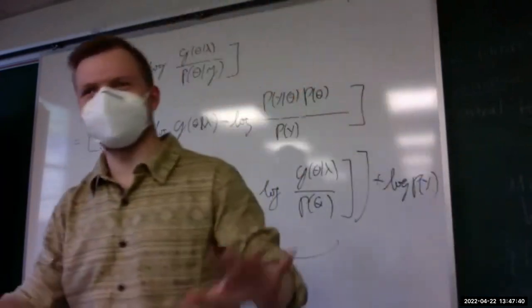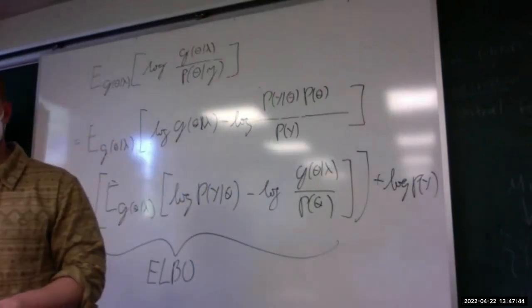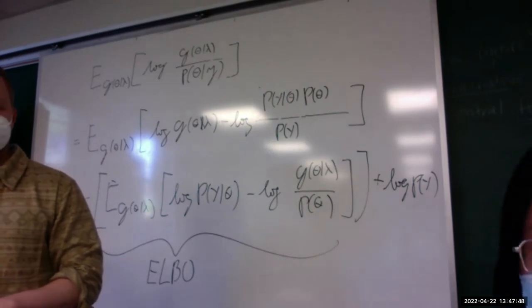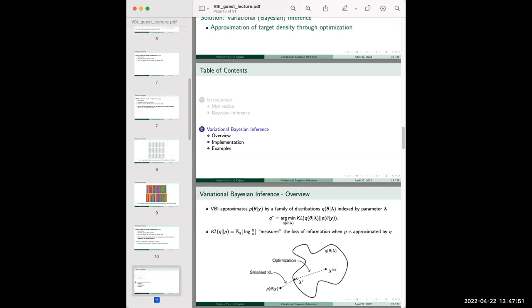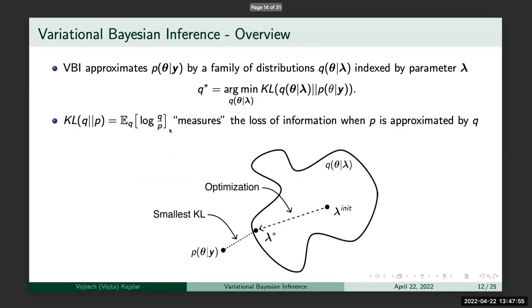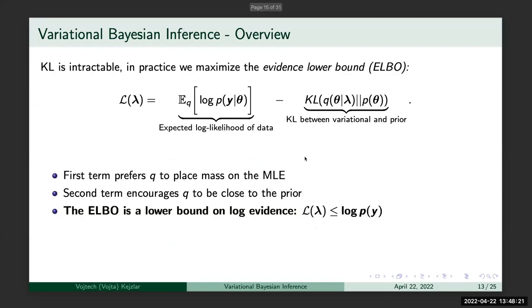You can get something that looks like: negative expectation with respect to the variational family of the log data likelihood, minus the log of the variational family divided by the prior, plus the log of the marginal likelihood. This quantity is what's called the evidence lower bound, or ELBO. To minimize the KL divergence, I don't need to worry about the marginal likelihood term at all, because it doesn't depend on the variational parameters. Minimizing the KL divergence is equivalent to maximizing the ELBO.